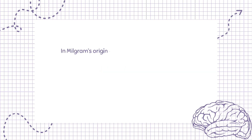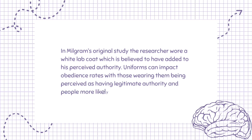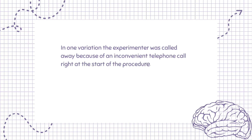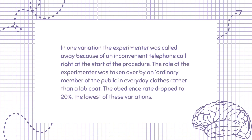Uniforms. In Milgram's original study, the researcher wore a white lab coat, which is believed to have added to his perceived authority. Uniforms can impact obedience rates, with those wearing them being perceived as having legitimate authority and people more likely to obey their orders. In one variation, the experimenter was called away by an inconvenient telephone call right at the start of the procedure. The role of the experimenter was taken over by an ordinary member of the public in everyday clothes rather than a lab coat, and the obedience rate dropped to 20%, the lowest of these variations.